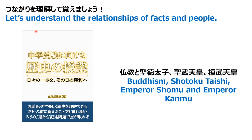Let's understand the relationships among these people: Buddhism, Shotoku Taishi who imported Buddhism and established Horyuji temple, Emperor Shomu who enacted the Konden Enen Shizai law and invited Ganjin from China, and Emperor Kanmu who escaped from Nara because the monks were very noisy and went to Kyoto, where he found many silent monks — and Saichou was the favorite of Kanmu. Thank you for watching this video, and see you next time.